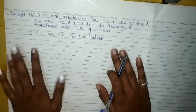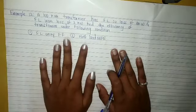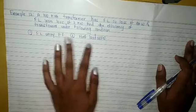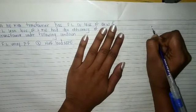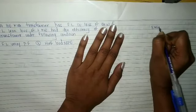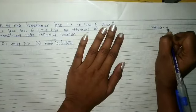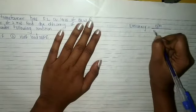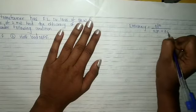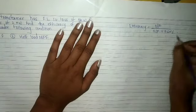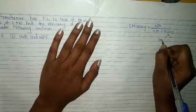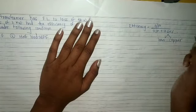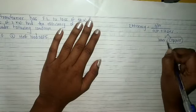These are the numericals to find efficiency. We know the formula — we have learnt in the last lecture that efficiency is equal to output divided by output plus losses. Losses are of two types: iron loss and copper loss. Copper loss varies and iron loss is constant.